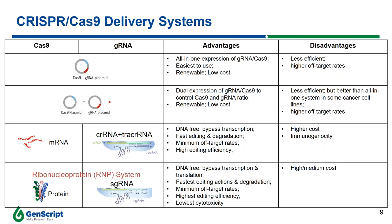The third approach uses the RNP system, combining a Cas9 protein with either a single-format sgRNA or a dual oligo format guide RNA. The advantages of the RNP system are: it is DNA-free, bypasses transcription and translation due to the use of a ready-to-use Cas9 protein, offers the fastest editing action and degradation, minimum off-target rates, highest editing efficiency, and — most importantly — results show the RNP system is less toxic. The only drawback is it may be more costly than the previous two approaches.